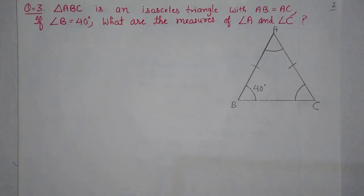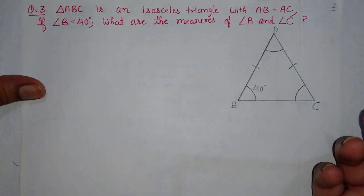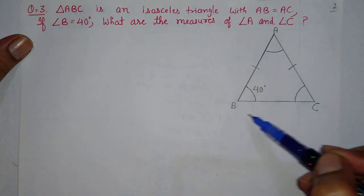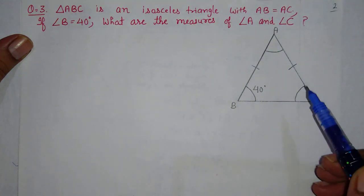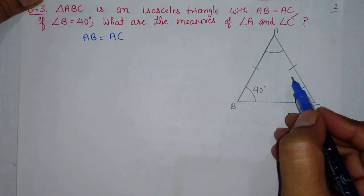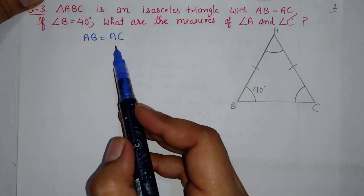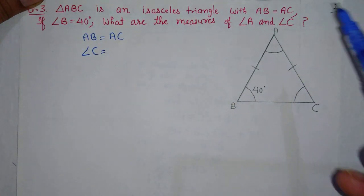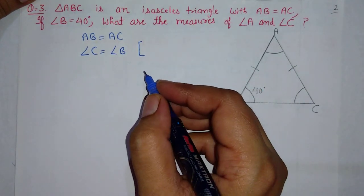Next, question number 3: triangle ABC is an isosceles triangle with AB equal to AC. You can see all the questions look similar because the same property is being used repeatedly. In triangle ABC, AB and AC sides are equal. Angle B is given as 40 degrees. What are the measures of angle A and angle C? Since AB and AC are equal, the opposite angle of AB is angle C, and the opposite angle of AC is angle B — so angle B and angle C are equal.